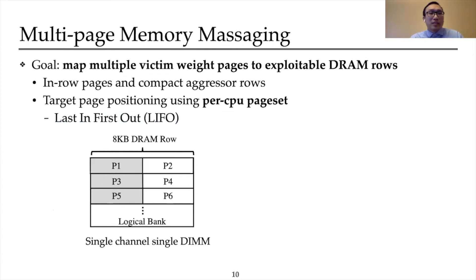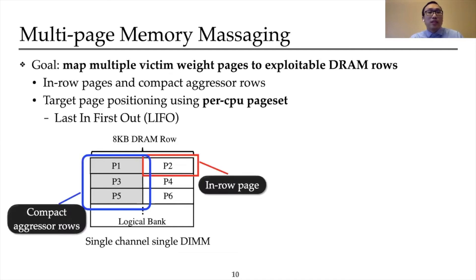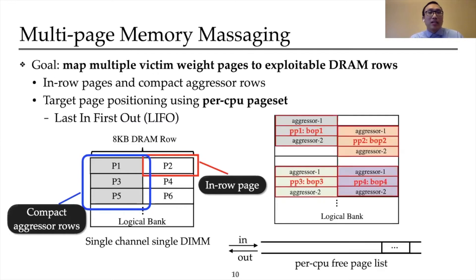Memory massaging in DeepHammer prepares a memory layout and maps multiple victim weight pages to exploitable DRAM rows. Each DRAM row typically contains parts of several different pages, called in-row pages. We find that Rowhammering can be confined to the in-row page without interfering with others. Accordingly, we propose the use of compact aggressive rows that only occupy part of three consecutive rows for double-sided Rowhammering. This optimization increases memory usage efficiency and avoids assignment conflicts for multiple targeted pages.